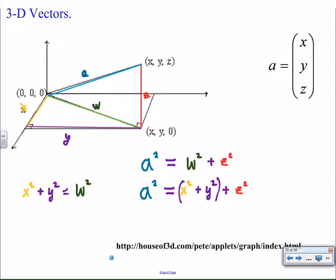So in other words, if you want to find the length, the magnitude of a 3D vector, all you have to do is take the square of all your components, add them together, and then take the square root. That will give you the magnitude of the three-dimensional vector.